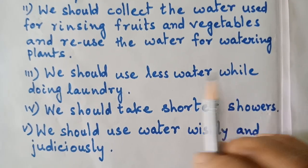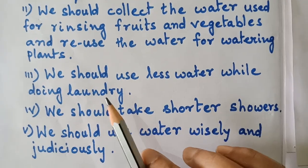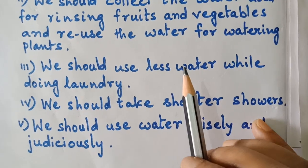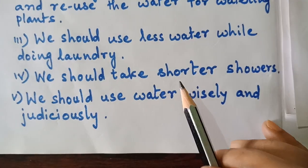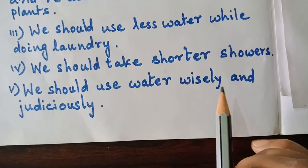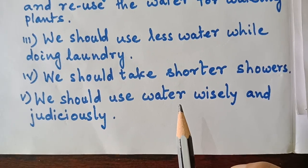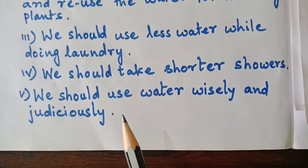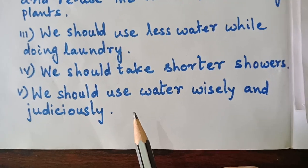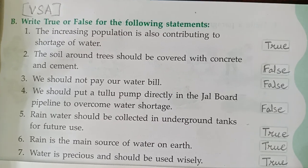We should use less water while doing laundry, that is while washing our clothes. We should take shorter showers. Then we should use water wisely and judiciously — we should think of the wise utility of water and judge how much water is required for the purpose and act accordingly.